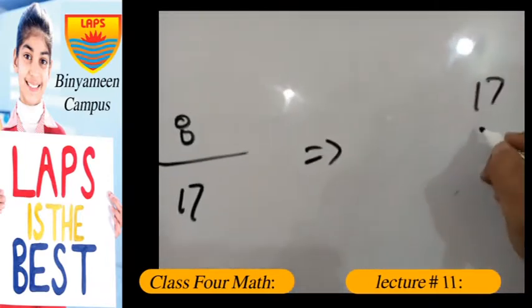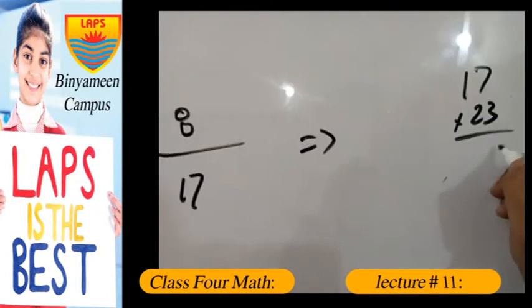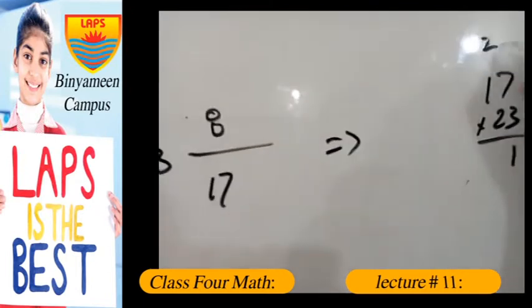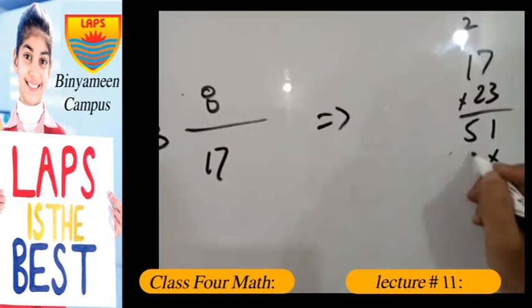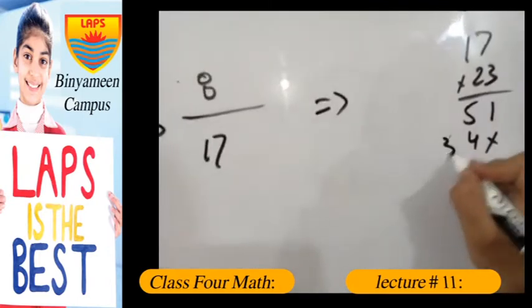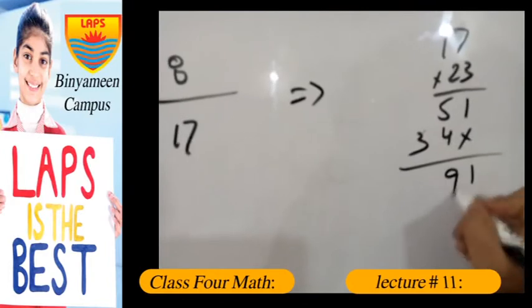So if we multiply 17 with 23, 3 sevens are 21, 2 will be carried here, 3 ones are 3 and 5. 2 sevens are 14, 1 will be carried here, 2 ones are 2 and 3. And we get 391.